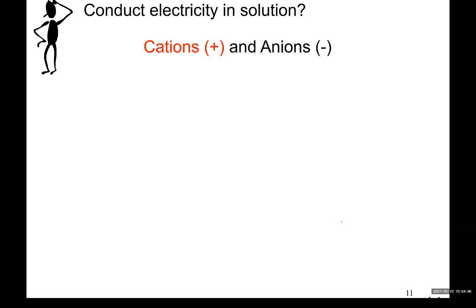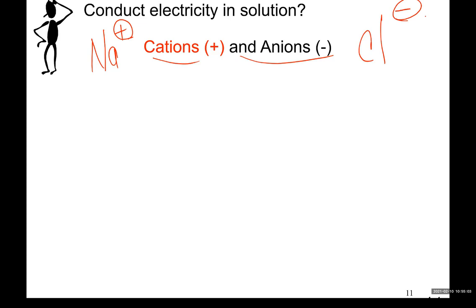What conducts electricity in water? Ions. What are ions? They are either positively or negatively charged. We call positively charged ions, like the sodium ion, cations. We call negatively charged ions anions. These two, when they are present in water, are always together — you can't have anions without cations and you can't have cations without anions. So any substance which contains cations will have anions as well, and when they are present in water, they can cause conduction of electricity.